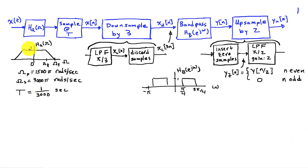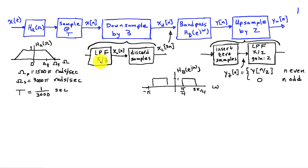The filter h_a has unity gain between 0 and ω_p radians per second, which is 1500π in this example, and goes to 0 by ω_s, which is 3000π. The sampling interval is 1/3000 seconds, or a sampling frequency of 3000 Hz. The down-sampling operation is implemented by first passing the data through a low-pass filter with cutoff π/3, which we'll assume is ideal. Then we discard samples, keeping every third sample, giving x_d(n), equivalent to the low-pass filter output evaluated at arguments 3n.